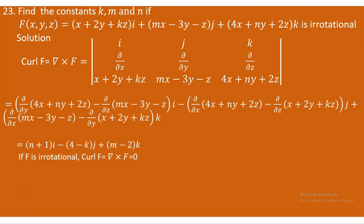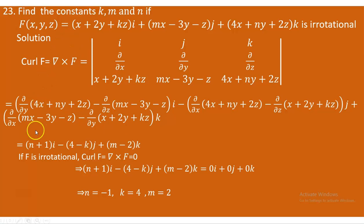So if F is irrotational, the curl of F — which is the cross product of the del operator with F — must yield the zero vector, not just scalar zero, but the zero vector, because this is a cross product. The three components must all match zero. Therefore, it is when N = -1, K = 4, and M = 2 that the vector field F is irrotational.